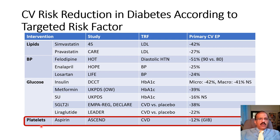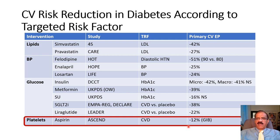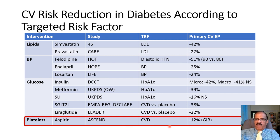Regarding antiplatelet therapy, aspirin was studied in the ASCEND trial, showing a 12% reduction in CVD incidence but an almost equivalent increase in GI bleeding risk. Therefore, aspirin is currently not recommended for diabetic patients without additional risk factors. If a diabetic patient has additional risk factors and tolerates aspirin, it would be beneficial.